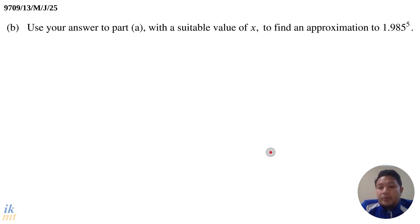Alright, good job. So part B, they mention here: use your answer to part A with a suitable value of X to find an approximation to 1.985 power 5. So for this one, I haven't seen this particular type of question for a while. It used to be in the old syllabus and also in A-level math.